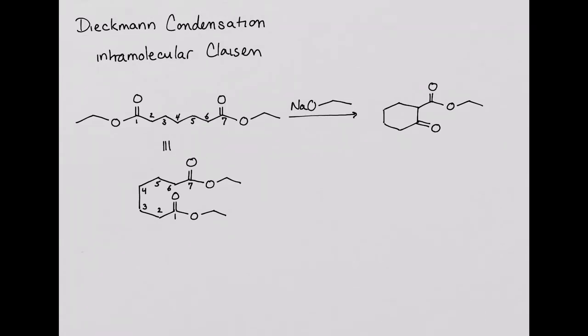In the first step of the mechanism, the enolate is formed through deprotonation of the alpha position of one of the esters. This enolate ion is resonance stabilized.